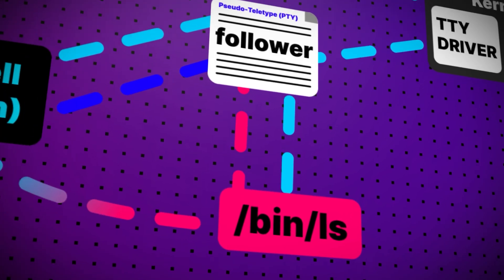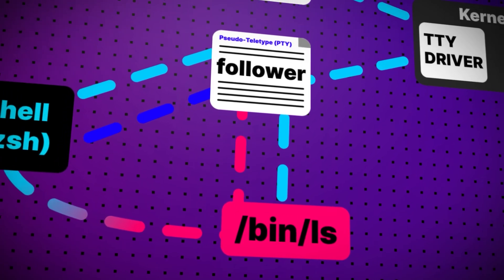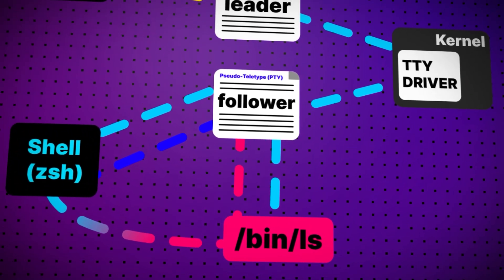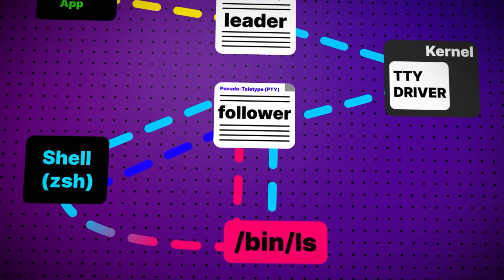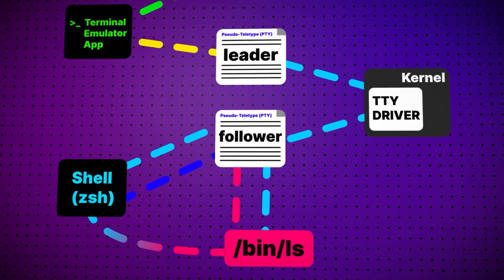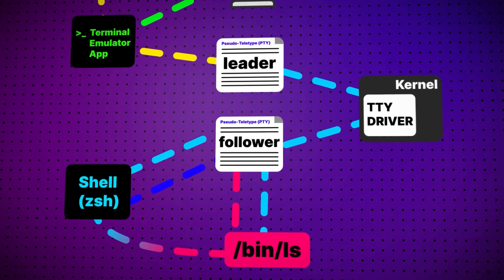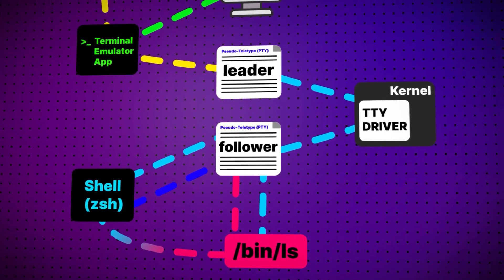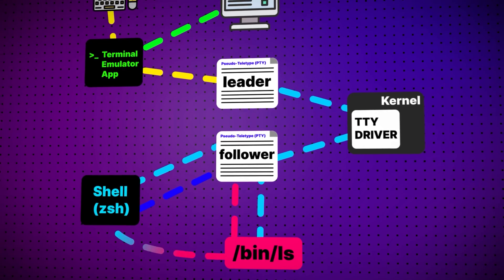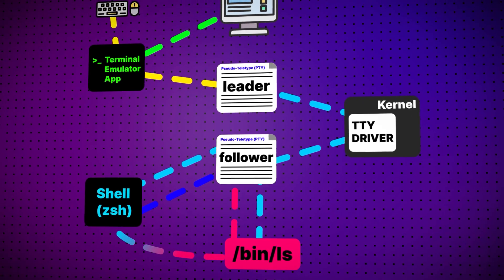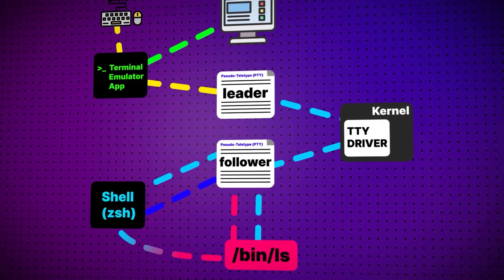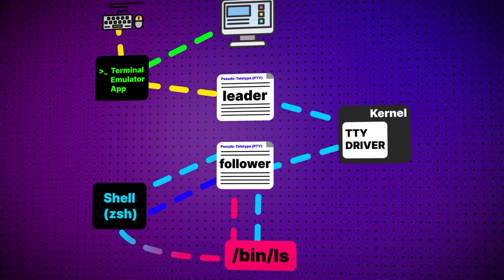When you run the ls command, it forks it to a child process and inherits the shell's file descriptors. All output from ls goes to the follower. The line discipline just passes the raw bytes straight to the leader. This is when the terminal emulator reads the stream and displays it to us.